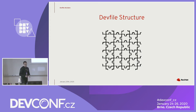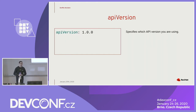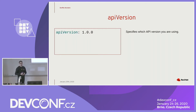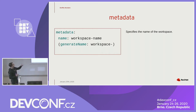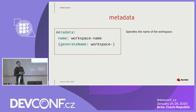Let's talk more about the structure of the devfile. I'll start with required attributes. The first required attribute is apiVersion, which specifies which API version you use. Right now Che supports just version 1.0.0. Another required attribute is metadata. It can contain a name or generateName. If you put name, the workspace created from this file will have that name. If you use generateName instead, you can create many workspaces, each with a name starting with that prefix.